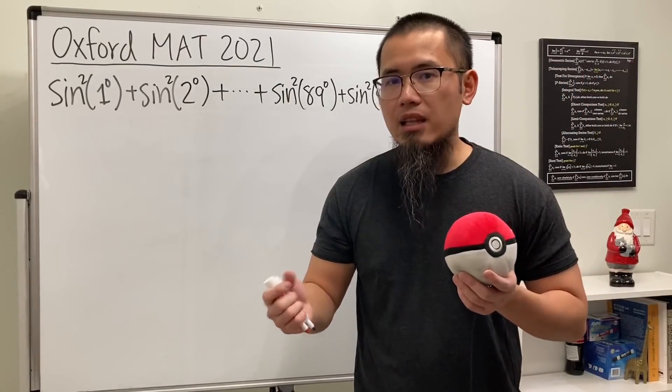Notice here we have 1 degree and this is 89 degrees. Together they are 90 degrees, meaning that they form complementary angles. So when you have sine right here, you can replace this with the cosine version, the co-function which is the cosine. And of course this is the square, and instead of putting down 89 degrees this is the same as 1 degree.